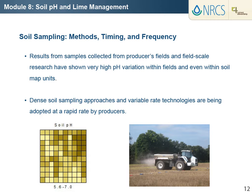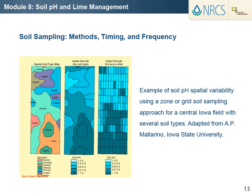There is increased interest in within-field site-specific pH measurement and variable rate lime application due to the often large variation in soil pH. This is especially true in fields with variable soils, for example, fields where acidic soils are intermixed with carbonate-containing soils with a higher, more basic pH. Dense grid soil sampling approaches and variable rate technologies are being adopted at a rapid rate by producers. Results from samples collected from producers' fields and field-scale research have shown very high pH variation within fields and even within soil map units. Taking into account the degree of spatial variability for most agricultural soils in the U.S., along with the cost of sampling, soil analysis, and limestone, the 2.5-acre soil sampling approach is the one most frequently recommended for making prescription maps for variable rate liming.